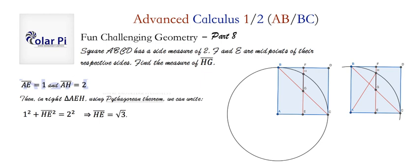But before we say that EG is 1, we must show that G is a midpoint of FE. How do we do that?